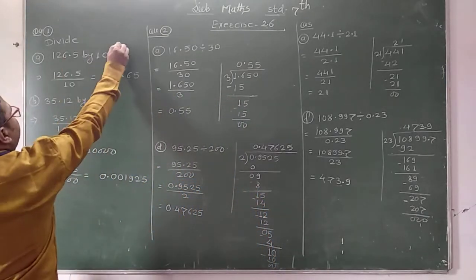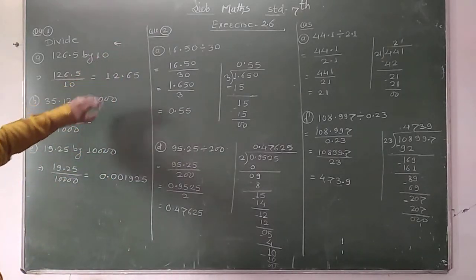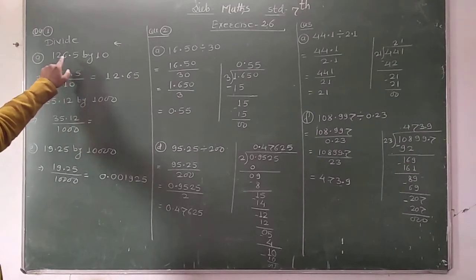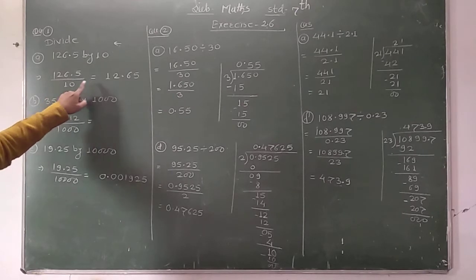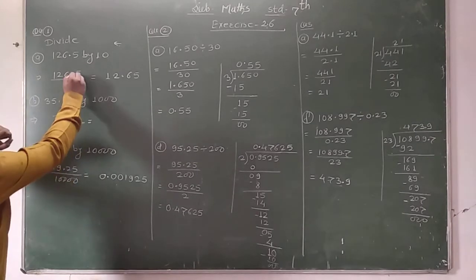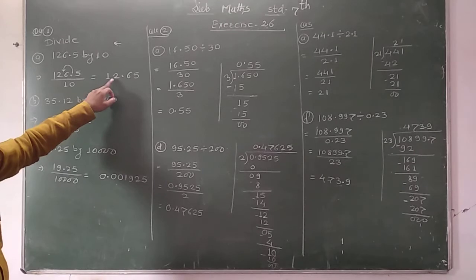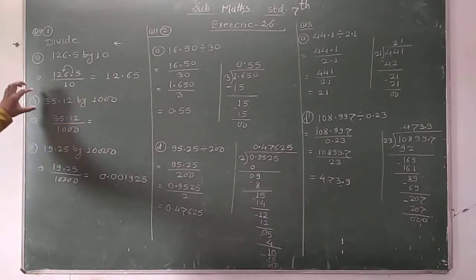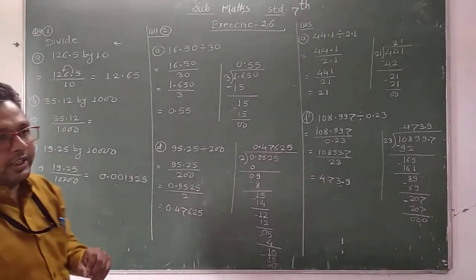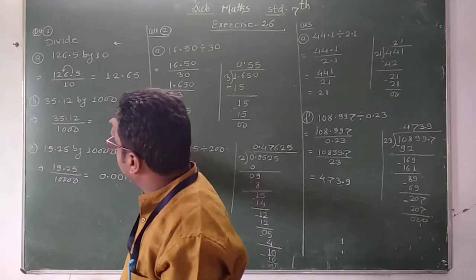Shift the decimal point to the left hand side according to the number of zeros following the 1. Now, 126.5 divided by 10 — we write 10 in the denominator. 1 is followed by one zero, therefore we shift the decimal point 1 digit to the left. The answer is 12.65. This division is very easy.